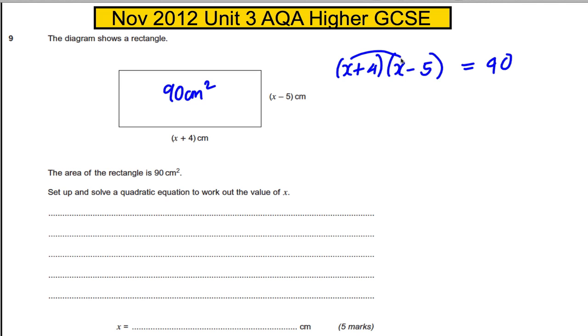Let's do x times that and x times that. I get x squared subtract 5x, and then I get plus 4x subtract 20, and all of this in our equation is 90. Collect like terms.